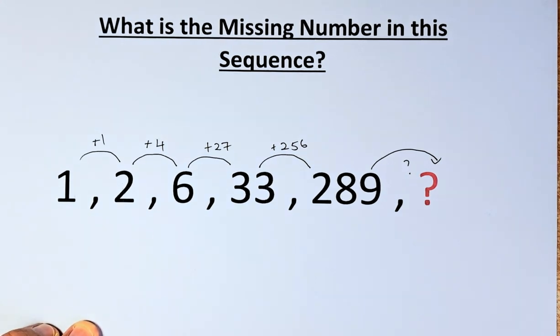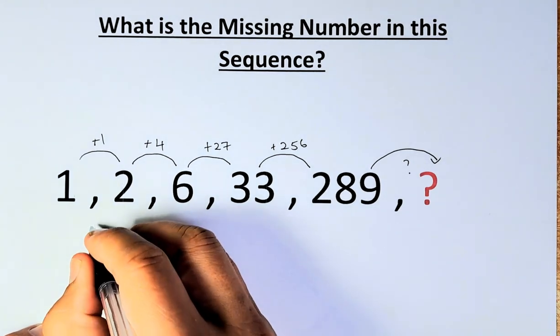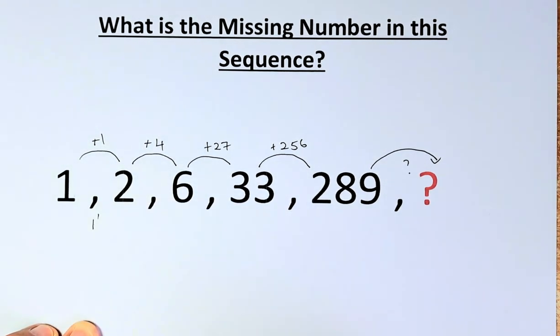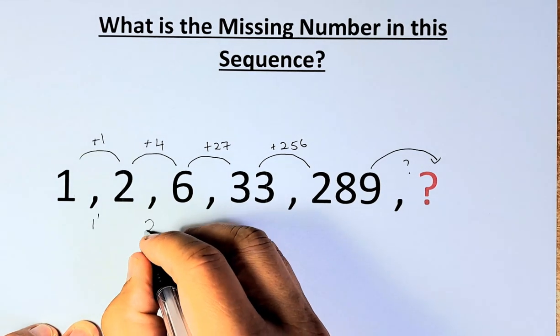Okay, so if you look carefully at 1, 4, 27, 256: 1 is the same as 1 to the power of 1. 4 is the same as 2 to the power of 2.